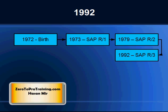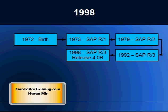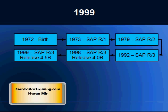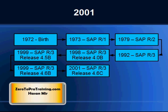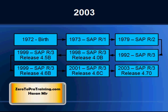In 1990, the third and most popular version, R3, was released. The 3 in R3 stands for Three-Tier Client Server Architecture. Then version 4B was released in 1998, version 4.5B in 1999, version 4.6B also in 1999, 4.6C in 2001, and finally 4.7 in 2003.